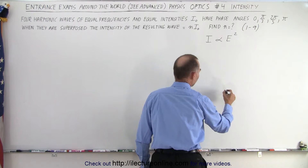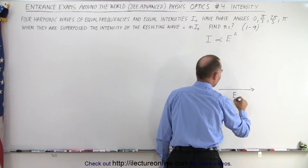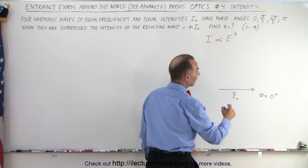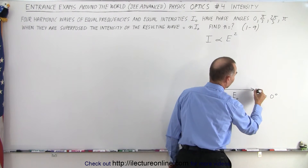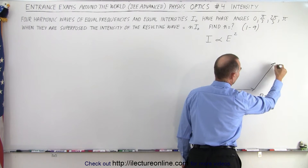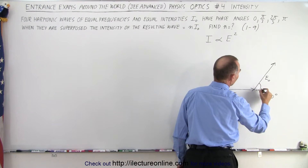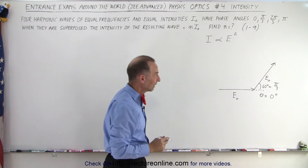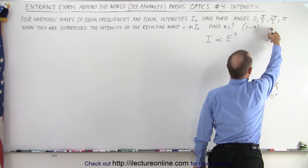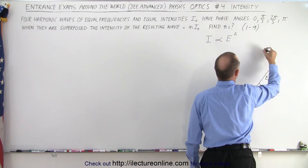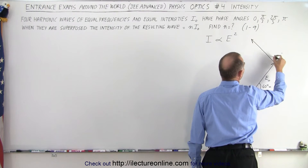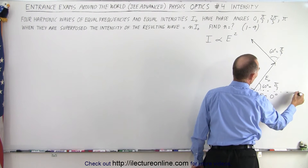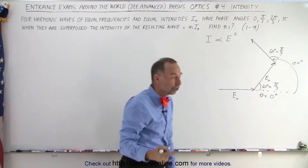We have our first phasor E₀ at angle θ = 0°. The next phasor has magnitude E₀ and makes an angle of 60° (π/3) with respect to the first. Then we have a third phasor at 2π/3, or 120 degrees — that is another 60° from the second phasor and 120° with respect to the first.